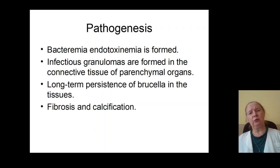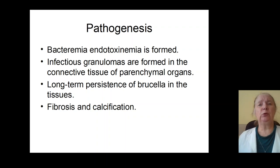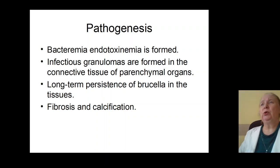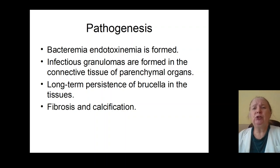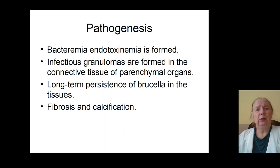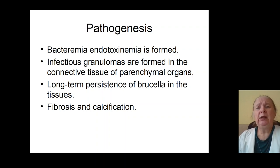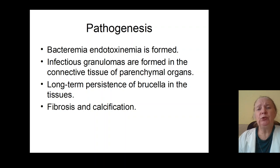Pathogenesis of brucellosis: sources of infection are animals, and bacteria penetrate to patients' organisms with alimentary products — meat, milk — and sometimes by aerogenic and contact ways of transmission. Bacteria penetrate to the intestinal and respiratory systems, then to lymph nodes causing hyperplasia of lymphoid cells and lymphadenopathy. From lymph nodes, bacteria penetrate to blood, forming bacteremia and toxinemia which cause increasing permeability of blood vessels and penetration of bacteria to internal organs.